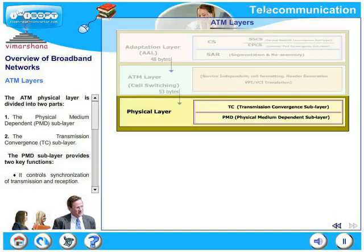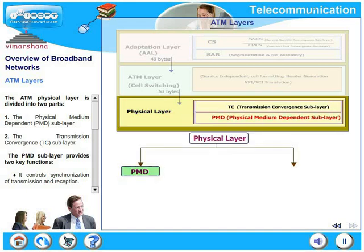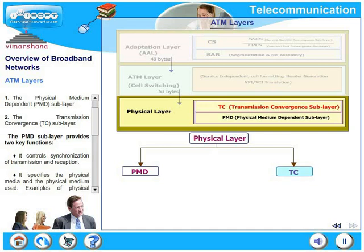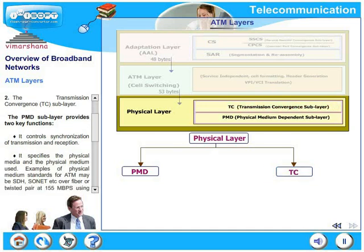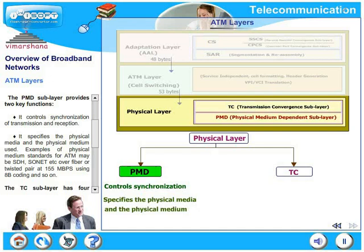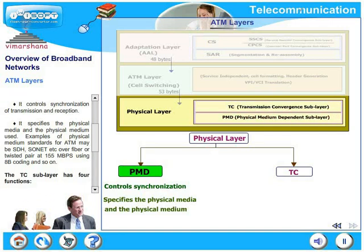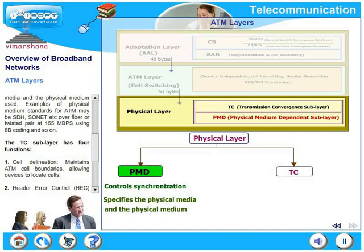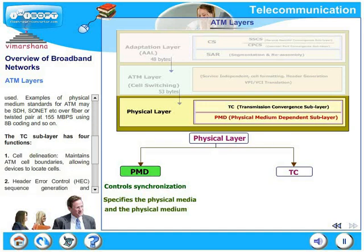The ATM physical layer is divided into two parts: the physical medium dependent sublayer PMD, and the transmission convergence layer TC. PMD has two key functions: it controls synchronization of the transmission and reception, and it specifies the physical media used. Examples of physical medium standards could be SDH, SONET, etc., over fiber or twisted pair, at 155 Mbps using 8B coding. This more or less completely defines the physical layer.